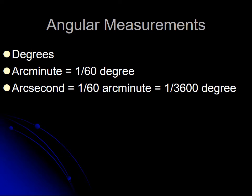When we make measurements, everybody knows about degrees. But in astronomy, we also use arc minutes and arc seconds. This goes back to the ancient Babylonians. One arc minute is 1/60th of a degree, and one arc second is 1/60th of an arc minute, which means it's 1/3600th of a degree.